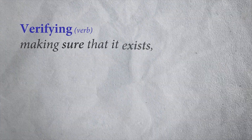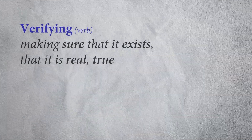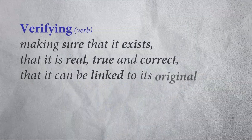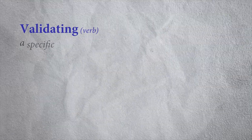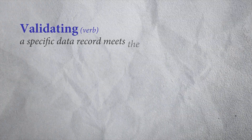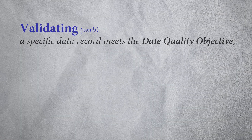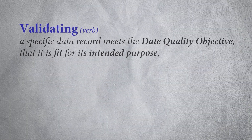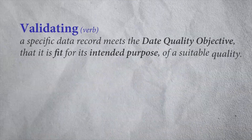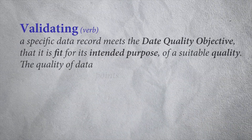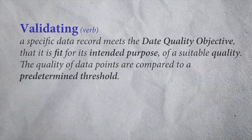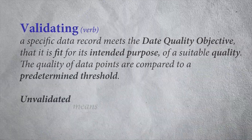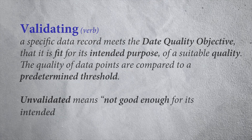Verifying means making sure that something exists, that it is real, true, and correct, and that it can be linked to its original source. And validating means that a specific data record meets the data quality objective — that it is fit for its intended purpose, of a suitable quality. The quality of data points is compared to a predetermined threshold. Unvalidated, therefore, means not good enough for its intended purpose. And that gives us a clear distinction.